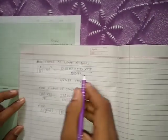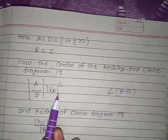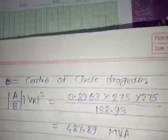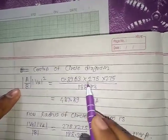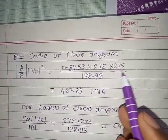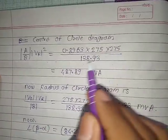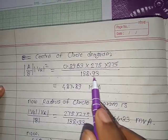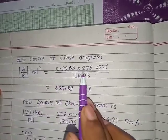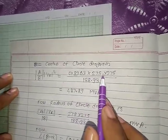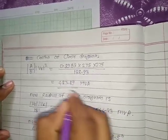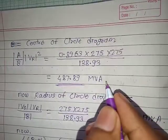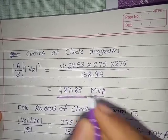Now we calculate the center of the circle using the formula: center = (|A|/|B|) × Vr² at angle β − α. With A = 0.8963, Vr = 275 kV, and |B| = 138.93 ohm, we compute (0.8963/138.93) × 275² = 487.89 MVA. The result is in MVA because Vr is in kV.